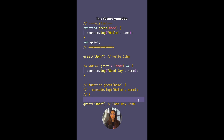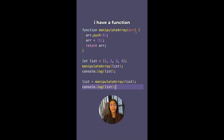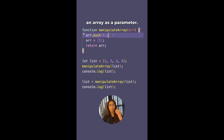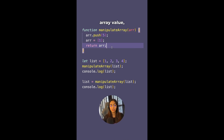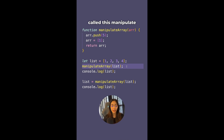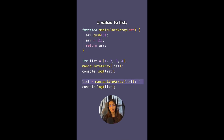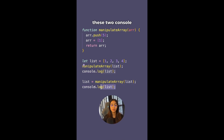I have a practice question. I have a function called manipulateArray that accepts an array. It does array.push(5), then reassigns the parameter to a new array [1], and returns it. Outside, I've created a list [1, 2, 3, 4], called manipulateArray(list), and printed list. Then I used the return value to reassign list and printed list again. What will be the output of these two console statements?